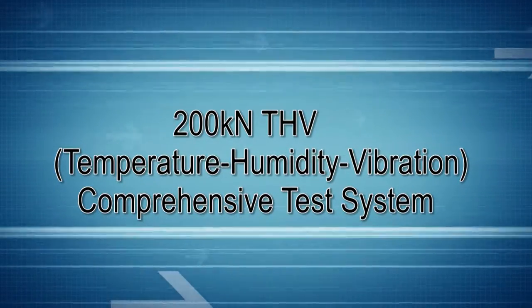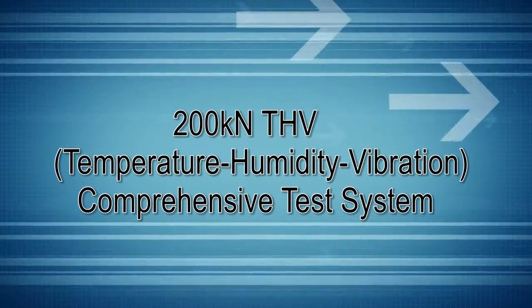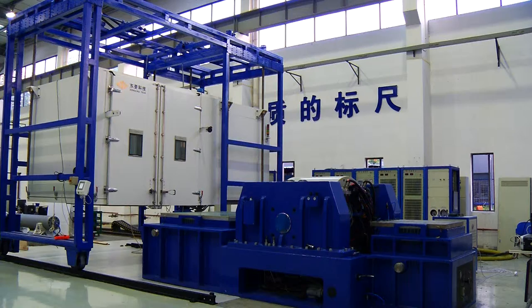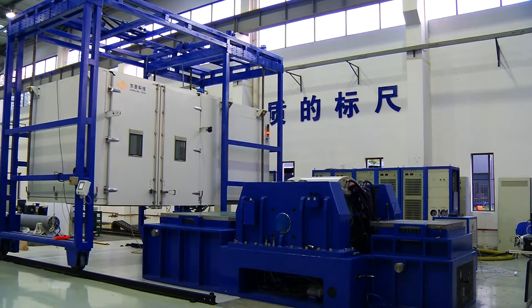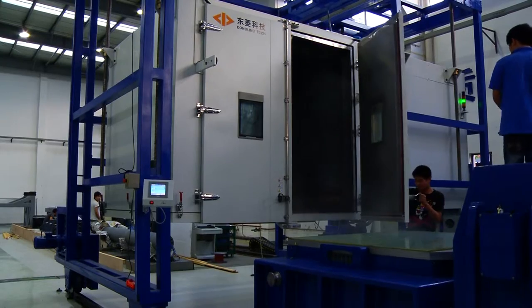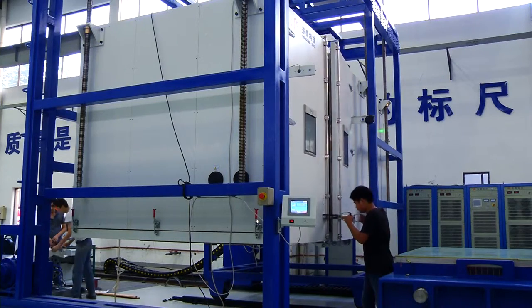200 kN THV Temperature, Humidity, Vibration Comprehensive Test System. This THV system uses 200 kN Electrodynamic vibration shaker and 10 m³ climate chamber to do temperature, humidity, and vibration comprehensive test.